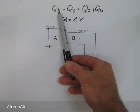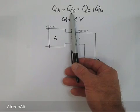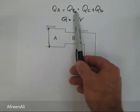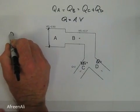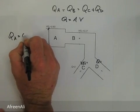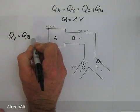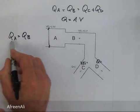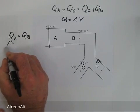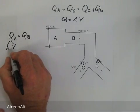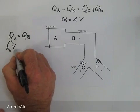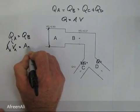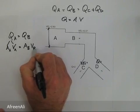Using our formula, the flow rate at A equals the flow rate at B, and we need to find the diameter at A. Since flow rate equals area times velocity, we can write: the area at A times the velocity at A equals the area at B times the velocity at B.